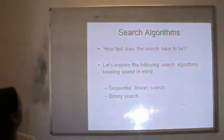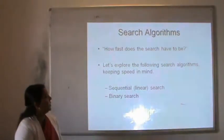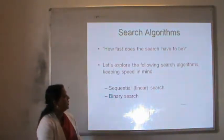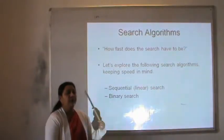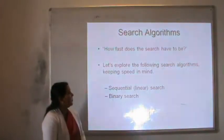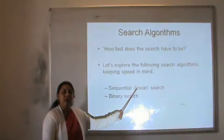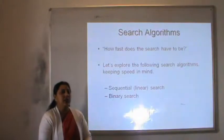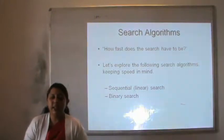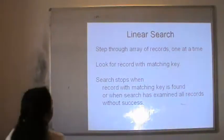When talking about a search algorithm, the key question is how fast the search has to be. Let's explore two search algorithms with speed in mind. Searching can be done in two ways: one is sequential, also called linear search, and another is called binary search.